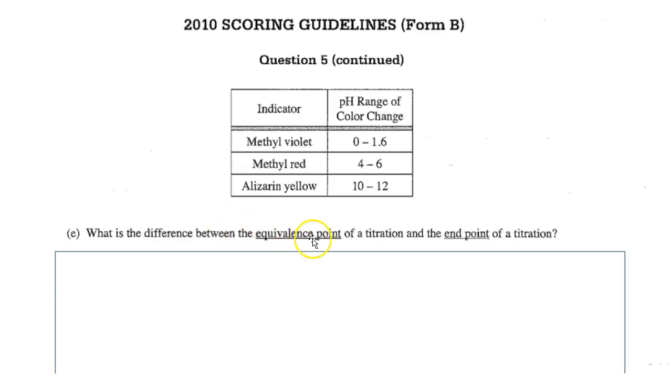What's different between the equivalence point and the end point? Well, the equivalence point is dead center when you have equal amounts of acid and base. The end point would be when you have an indicator that actually changes color, which is, in my opinion, not as precise. So it would give you the end point with the indicator, the equivalence point with a pH meter.